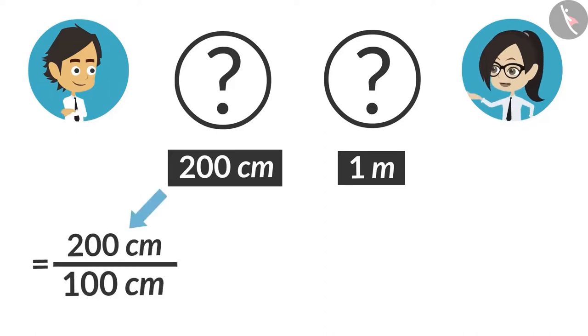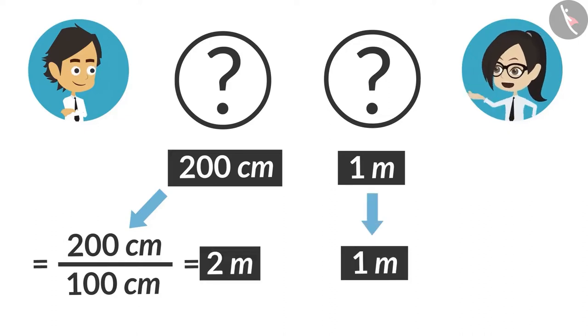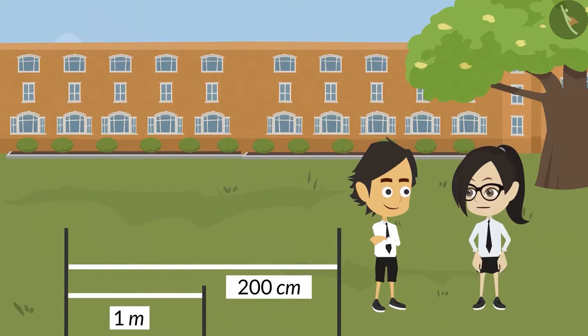Now convert 200 centimeters into meters and see. 200 centimeters divided by 100 gives 2 meters. Yes, even now you can compare 1 meter and 2 meters and say that 2 meter is bigger.